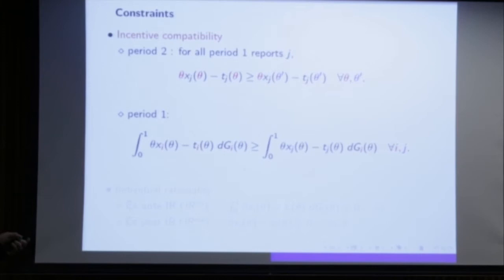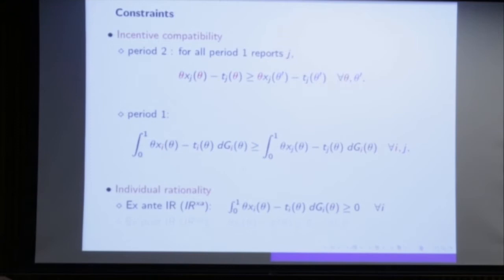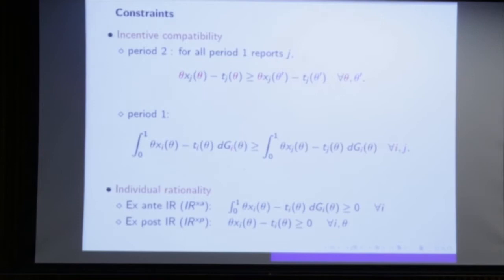Regarding individual rationality: the standard IR constraint in the Courty-Li framework requires that when I order over the internet, I get at least zero on average. The new addition is that we don't only need zero on average — we need that for every ex-post state the agent is willing to keep the jeans and not send it back. The whole new thing is just adding this simple ex-post participation constraint.